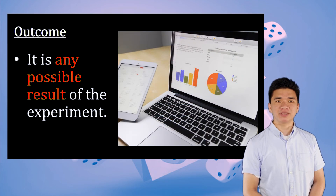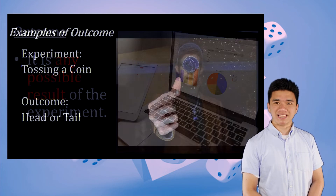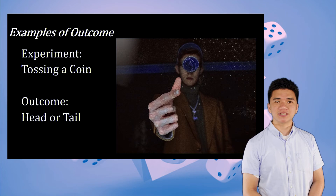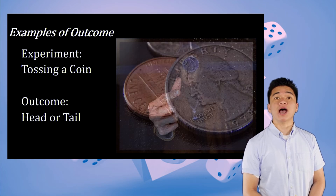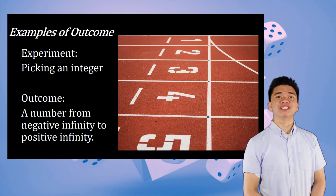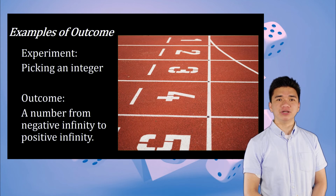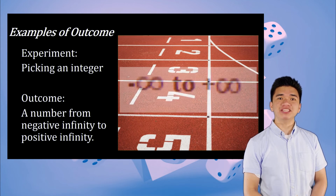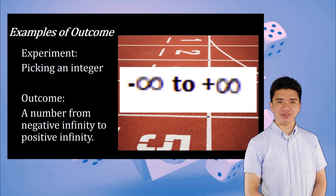Outcome is any possible result of an experiment. For example, for an experiment of tossing a coin, the outcome could be a head or a tail. For an experiment of picking an integer, the outcome could be a number from negative infinity to positive infinity.